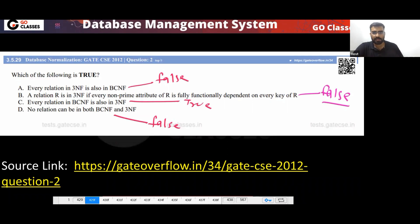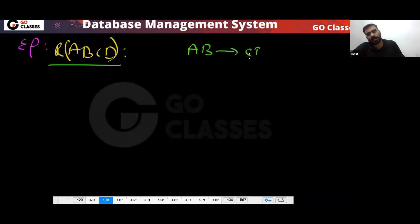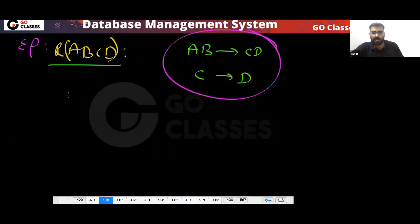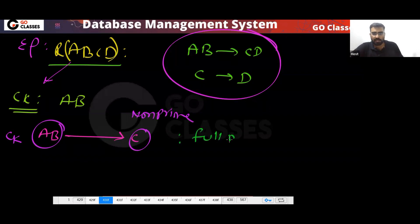Can you give a counterexample where you have 2NF but not 3NF? Consider relation A, B, C, D with dependencies: A,B → C,D and C,D → D. The candidate key is A,B. A,B → C is full dependency, and A,B → D is also full dependency.